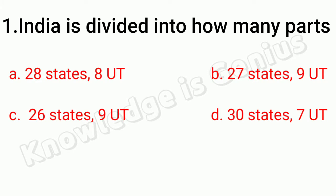India is divided into how many parts? A. 28 states, 8 union territories. B. 27 states, 9 union territories. C. 26 states, 9 union territories. D. 30 states, 7 union territories.